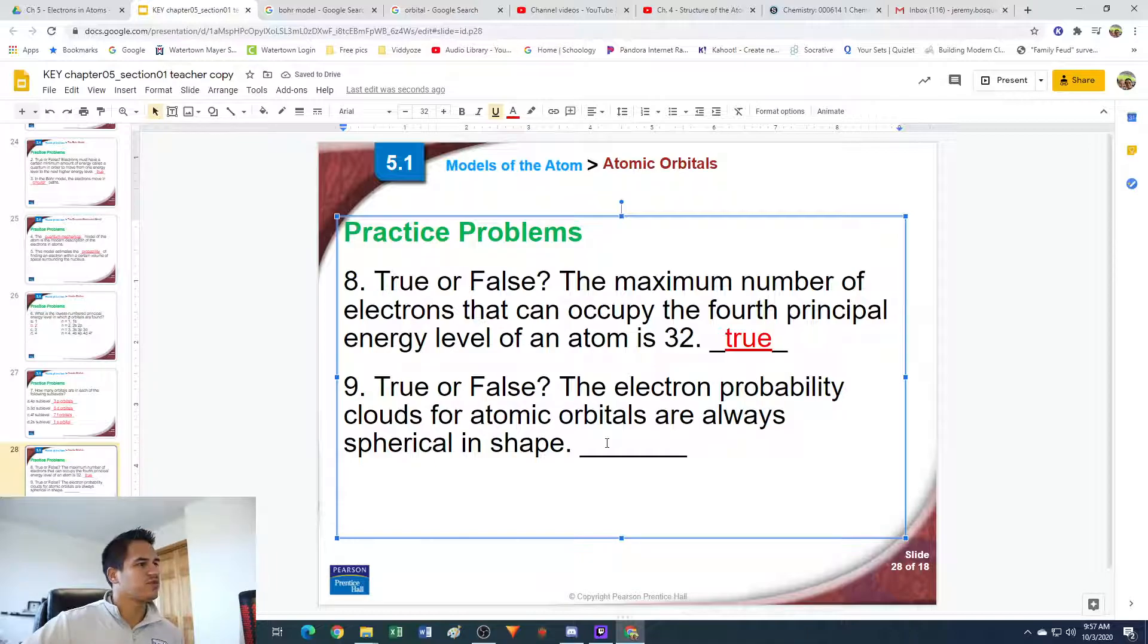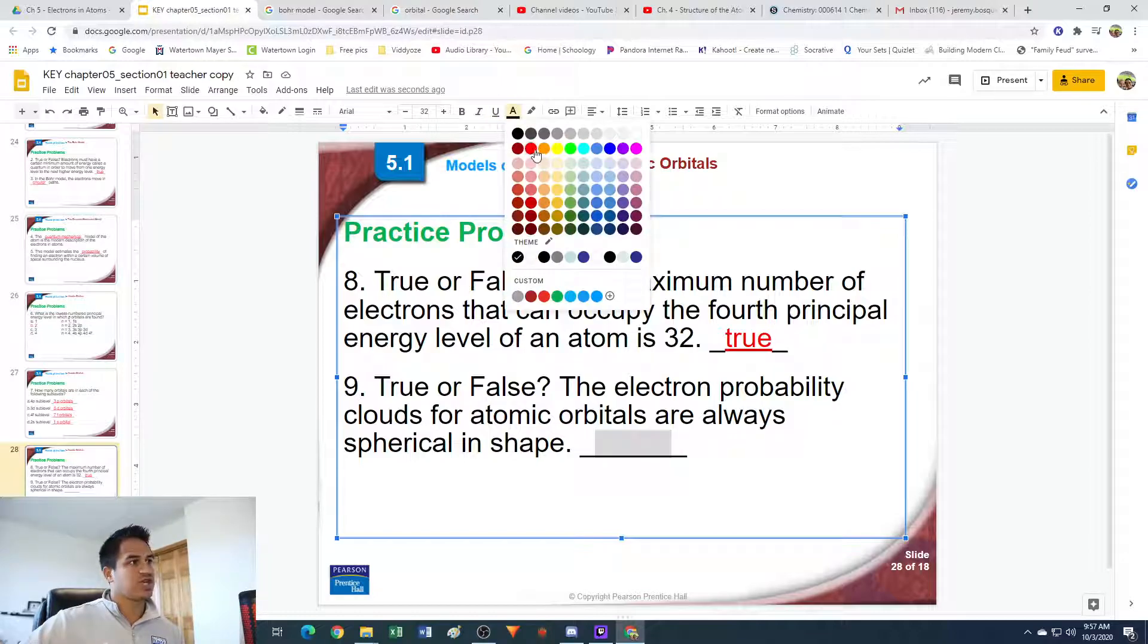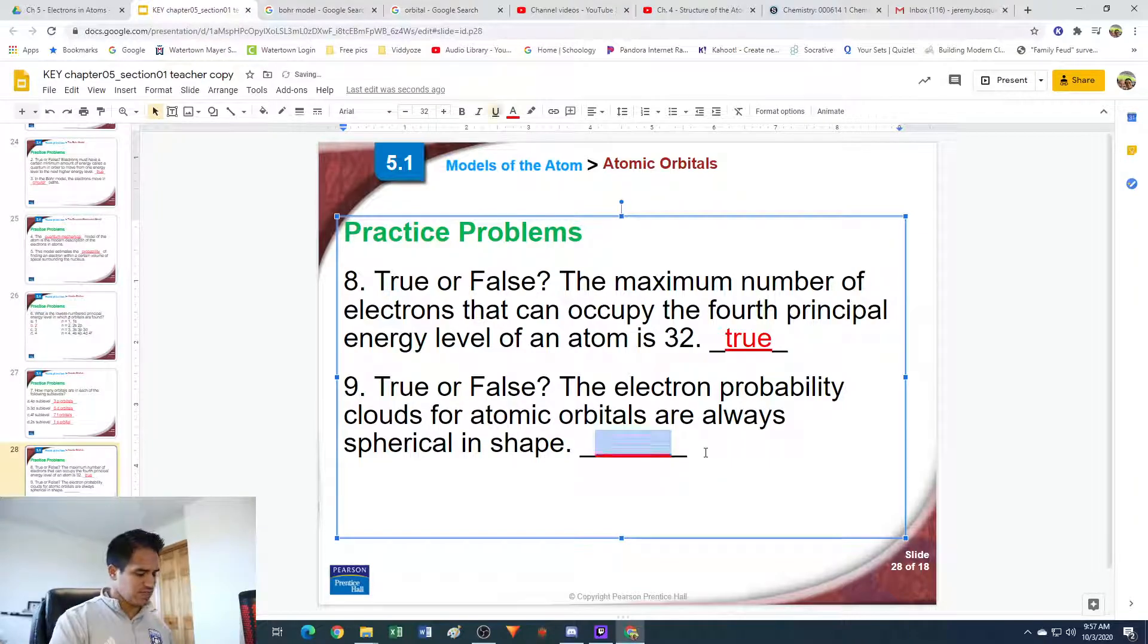Number nine. True or false: The electron probability clouds for atomic orbitals are always spherical in shape. That is false. S orbitals are spherical in shape, but P orbitals are peanut shaped, and D orbitals are like four-leaf clover shaped. So that's not true - they're not always spherical in shape.